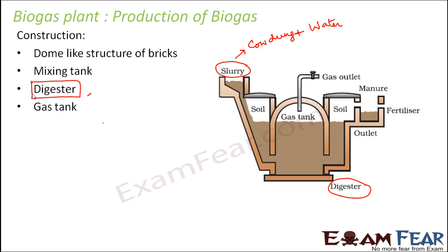Next is the gas tank. You can see the gas tank here — this portion is the gas tank. The biogas is stored here, and that is why it is called the gas tank. It is located just above the digester.